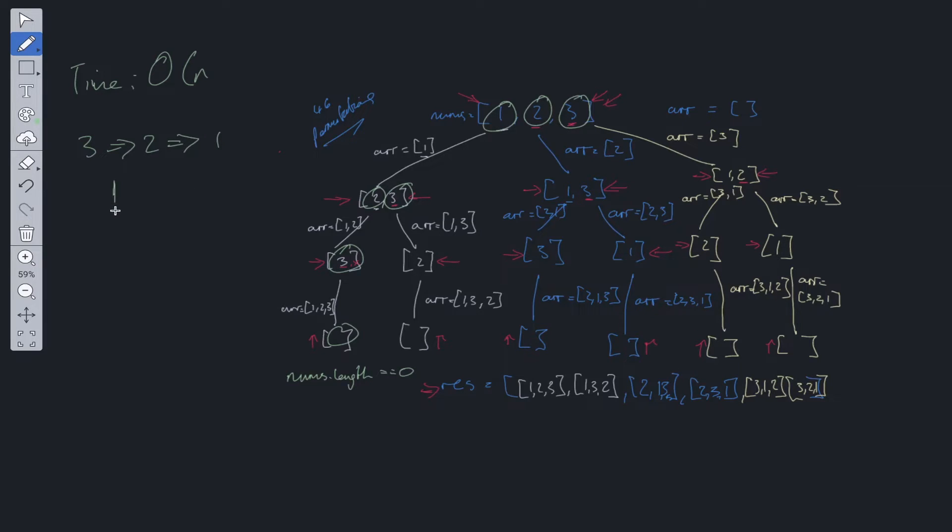So that is factorial. So it'll be N times N factorial, where N is the values in the nums array. Now in terms of space complexity, what we're doing throughout this entire recursive call stack is we're allocating information into this array here. So again, it's going to be the same, O of N times N factorial, where N is the number of integers within the array. So let's code this out now.